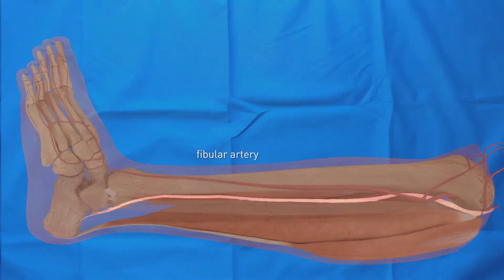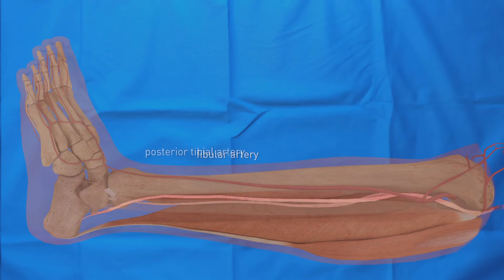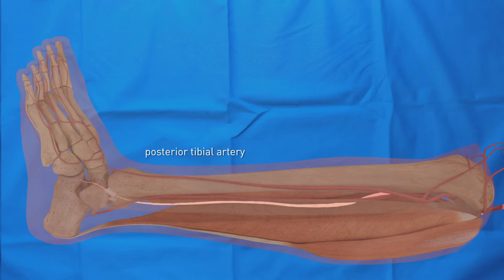The fibular artery arises from the tibiofibular trunk, which is a continuation of the popliteal artery. More distally, it runs between the tibia and fibula. The posterior tibial artery also arises from the tibiofibular trunk. More distally, it is located on the posteromedial side of the distal tibia. Pulsations can be palpated here normally.